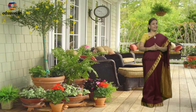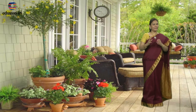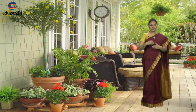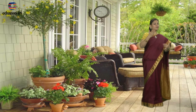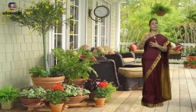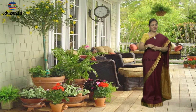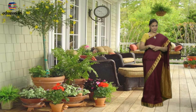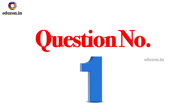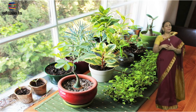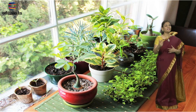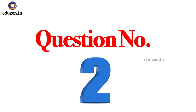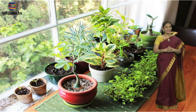Shweta has some green plants in her balcony. During winter, the sunlight doesn't fall in that balcony, so she shifts some of her plants to a place where there is sunshine. Why does she do so? What is the reason for shifting the plants from the place where there is no sunshine to the place where there is sunshine? Which human value did Shweta show in this case?